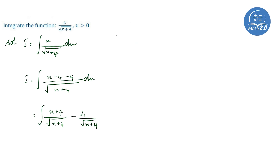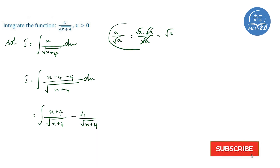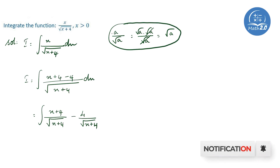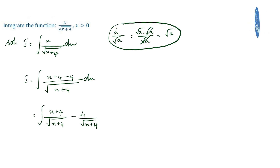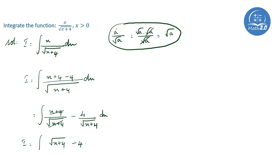We have a rule: a divided by the square root of a equals the square root of a, since root a times root a divided by root a leaves root a. So, x plus 4 divided by the square root of x plus 4 becomes x plus 4 to the power 1 by 2, and the second term becomes minus 4 into x plus 4 to the whole power minus 1 by 2.